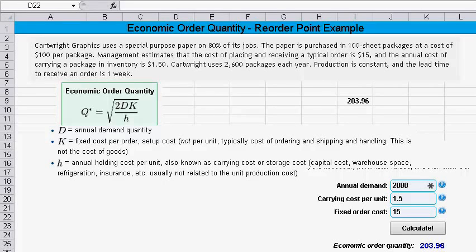Let's take a look at this economic order quantity reorder point example. In the gray at the top you can see the question.